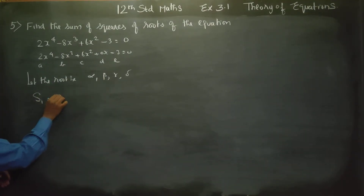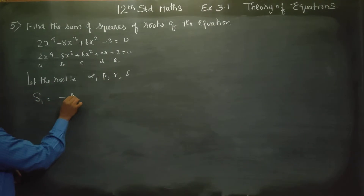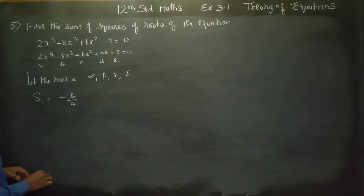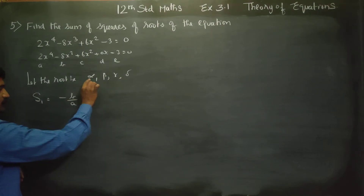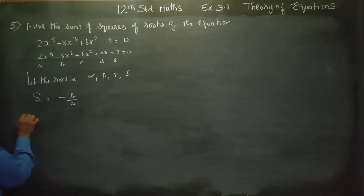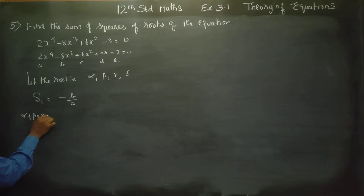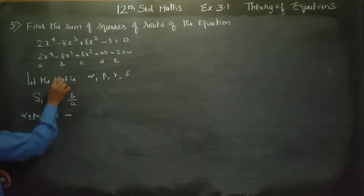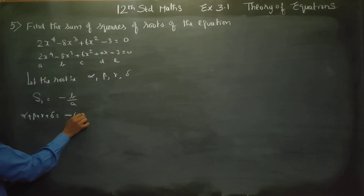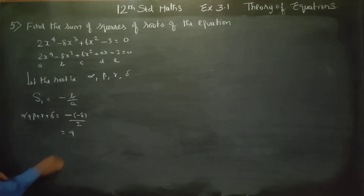S1 formula: S1 is the sum of the roots taken one at a time, which equals minus b by a. So alpha plus beta plus gamma plus delta equals minus b by a. That is minus of minus 8 by 2, therefore the answer is 4.